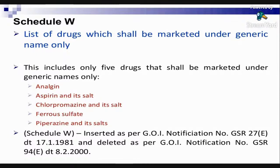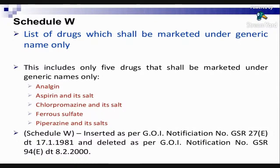Schedule W contains the list of drugs that shall be marketed under generic names only. It includes only five drugs: analgin, aspirin and its salts, chlorpromazine and its salts, ferrous sulfate, and piperazine and its salts. Schedule W was inserted per Government of India notification GSR 27E dated 17-1-1981, but this schedule has since been deleted as per a subsequent Government of India notification.